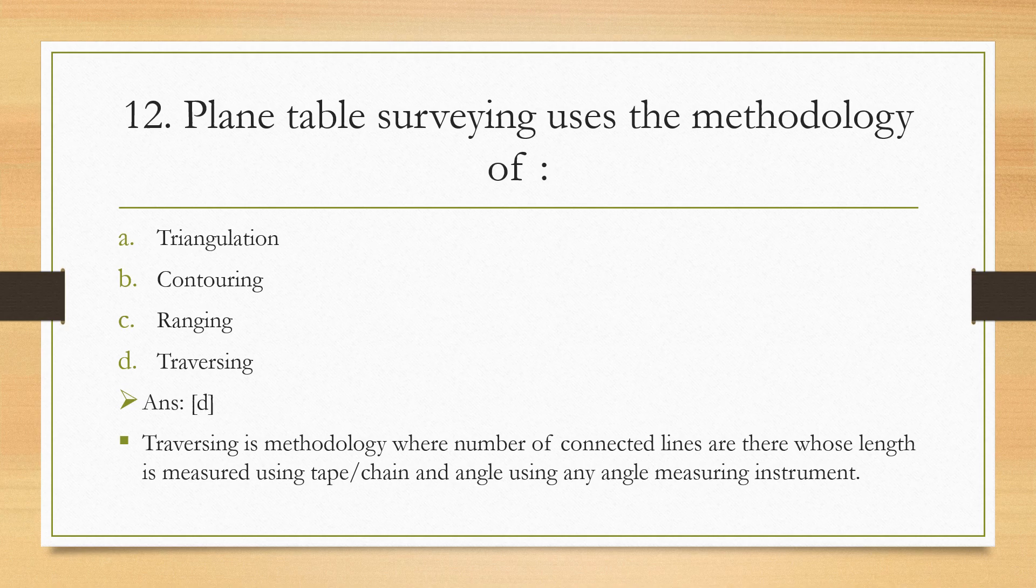Next question: Plane table surveying uses the method: allosia, triangulation, contouring, arranging, or traversing? The right answer is traversing. Traversing is the method where a number of connected lines are there whose length is measured using tape or chain and angle using any angle measuring instruments.